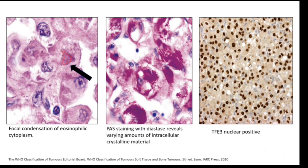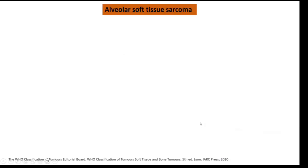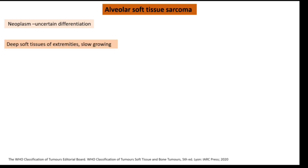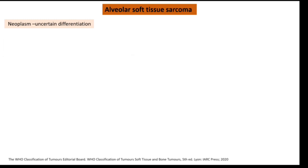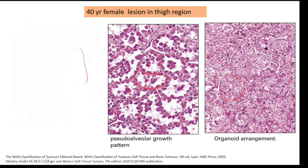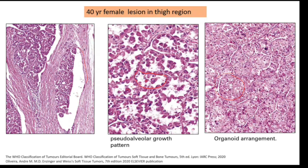The eosinophilic material was positive for PAS but it is diastase resistant. If it were diastase sensitive, we would think it is glycogen — but it is not. So the answer is alveolar soft part sarcoma. The cell of origin is unknown. This occurs in the extremities and is slow growing. Tumor cells are arranged in a nest, alveolar, and organoid pattern, separated by nice vasculature with well-defined blood vessels.